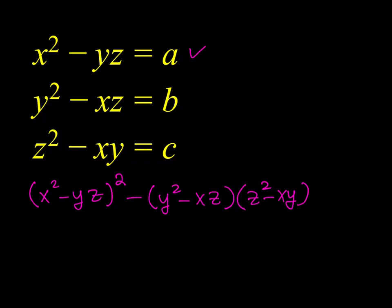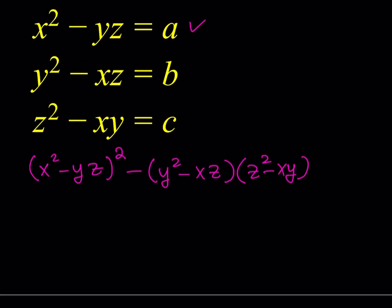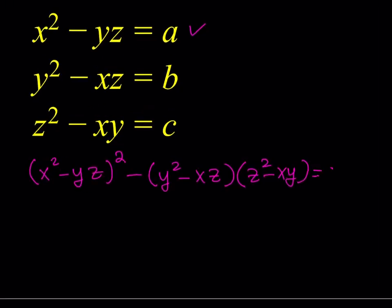You might be asking why I'm doing this. There's something interesting about this method — notice how we are applying the same mentality in each equation. Look at the first equation: it's X squared minus YZ. X is multiplied by itself, then two other variables are multiplied together and subtracted. We're doing the same thing here but treating each equation as a single variable. Therefore, the right-hand side is going to be A squared minus BC.